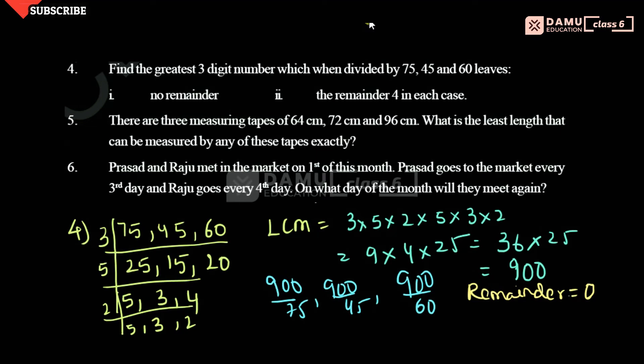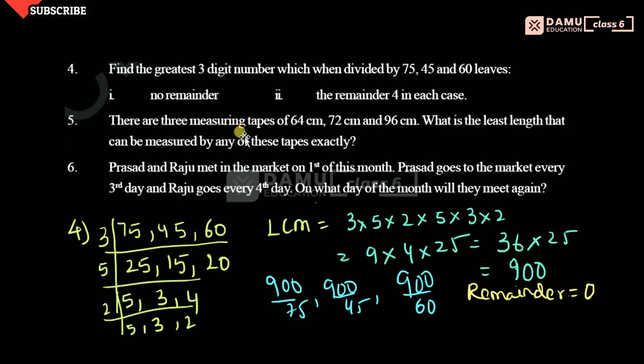Since the remainder required is 4, we simply add 4 to 900: 900 plus 4 equals 904. So 904, when divided by 75, 45 or 60, will give remainder 4 in each case. That is our answer.